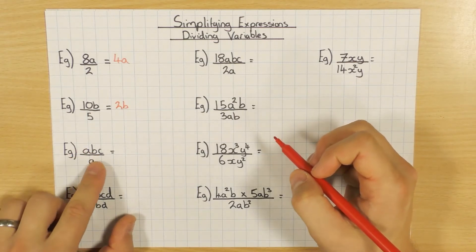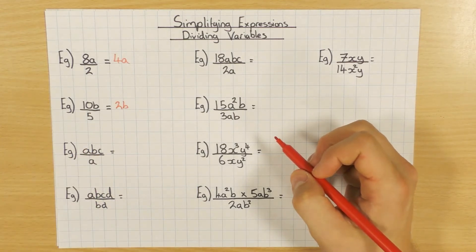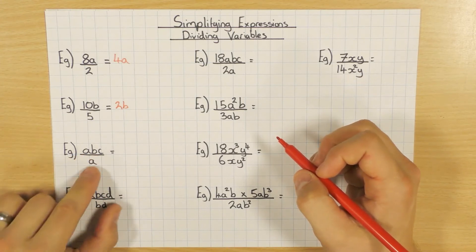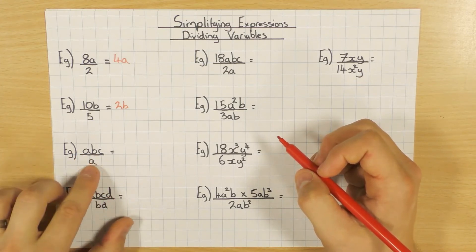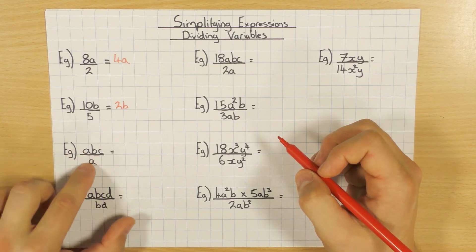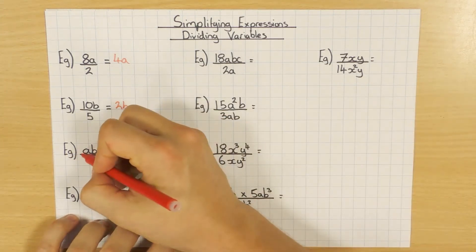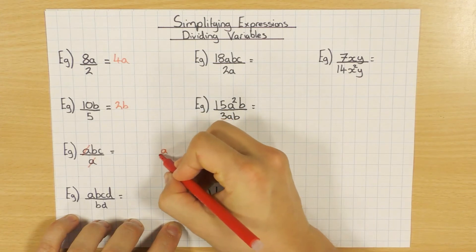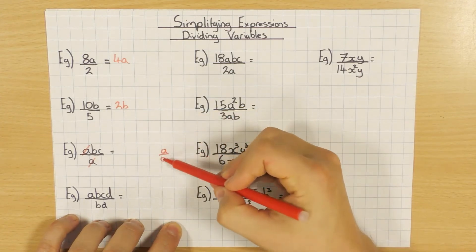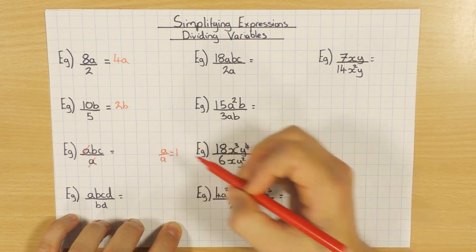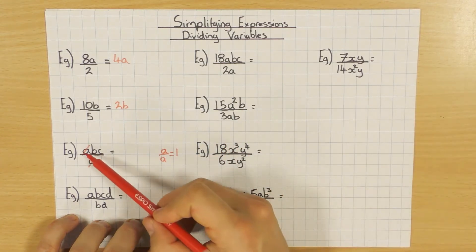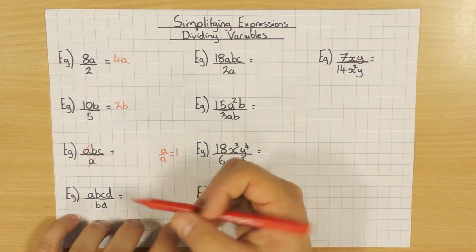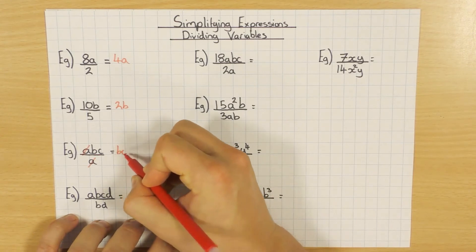Now, if I don't have any numbers, just some letters or variables, let's have a look. Now I've got a, b, c on top, divided by a. When you have the same letter on the top and the bottom, you can cancel them off, because if you do a divided by a, you're dividing it by itself, and anything divided by itself is 1. So essentially I'm doing 1 times b times c, which just leaves me with bc.